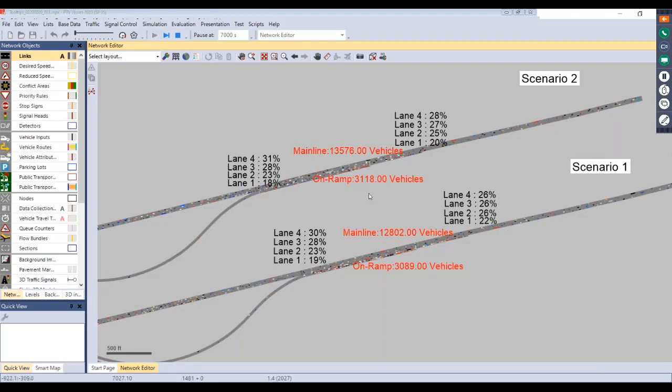But we did start to see some trends specifically that in the second scenario where we have a more aggressive lane change behavior set up for the leftmost lanes furthest away from the merge, we are able to get more vehicles through on both the main line and the on-ramp.